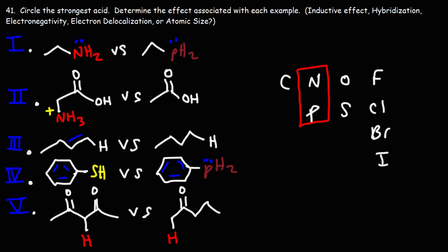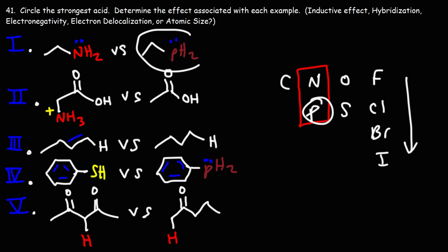Because these elements are directly attached to the hydrogen, atomic size will be more relevant. The element that is bigger will be able to stabilize the negative charge on the conjugate base. Atomic size increases as you go down. Phosphorus is bigger than nitrogen, so PH2 is going to be more acidic because the conjugate base is better stabilized by a bigger phosphorus atom. Phosphorus handles that negative charge better than nitrogen. The reason is due to atomic size.